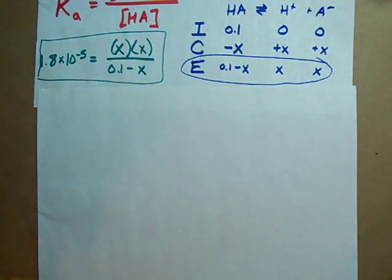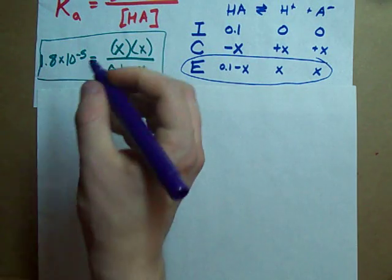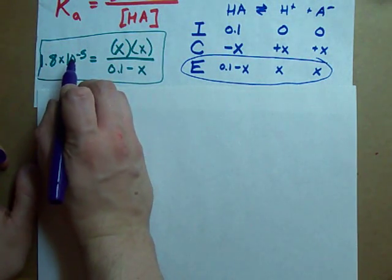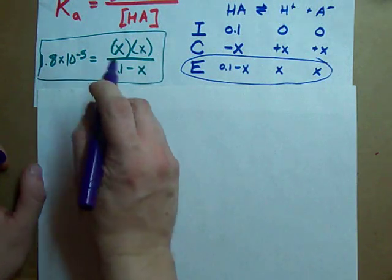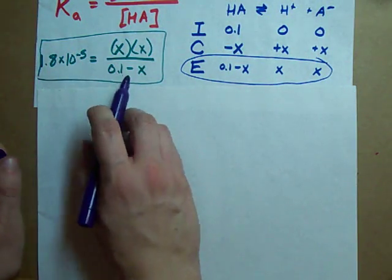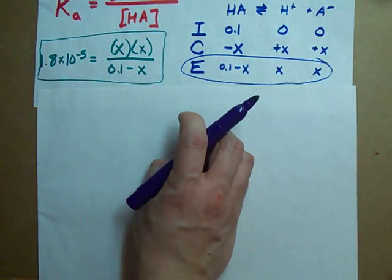Your teacher may prefer you to use some kind of mathematical assumption to simplify the way that you do it. What is that kind of mathematical assumption, you ask? Well, if Ka is very small, especially relative to the initial concentration here, you may be able to make an assumption.